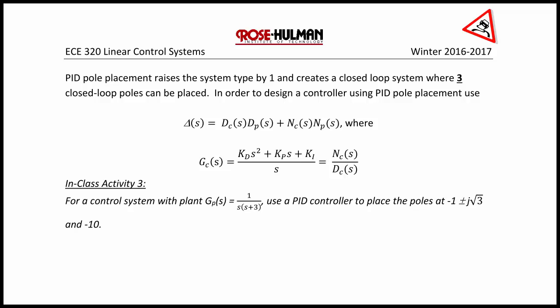Now let's try to illustrate this with in-class activity 3. For a control system with gp of s equal 1 over s times s plus 3, use a PID controller to place the poles at negative 1 plus or minus j square root of 3 and negative 10.